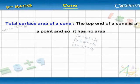Total surface area of cone. The top end of a cone is a point and so it has no area.